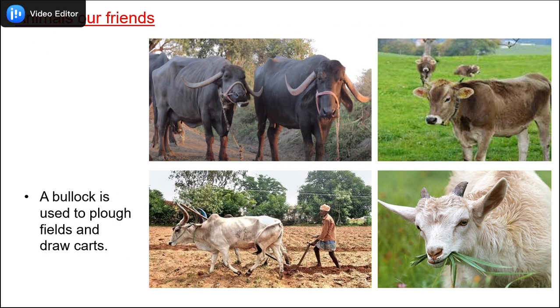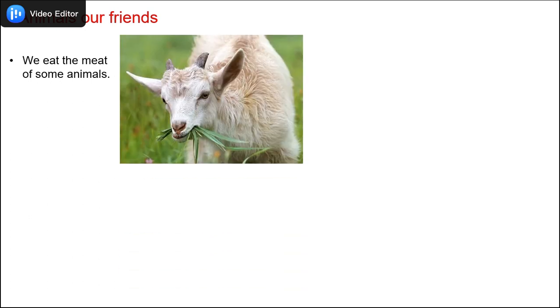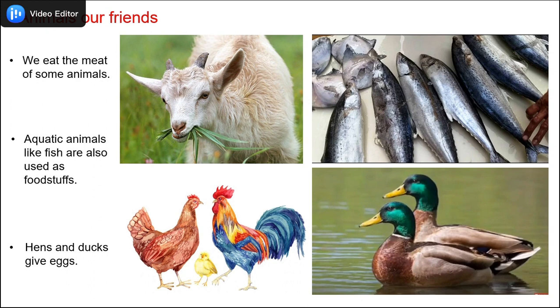Animals are our friends. You can see the picture of the cow, the buffalo, and the goat. Animals like cows, buffaloes, and goats give us milk. A bullock is used to plough fields and draw carts. Many animals are used for hard labor like donkeys, camels, and horses. We also eat the meat of some animals like the goat. Aquatic animals like fish are also used as foodstuffs. Hens and ducks give us eggs and we also eat their meat.